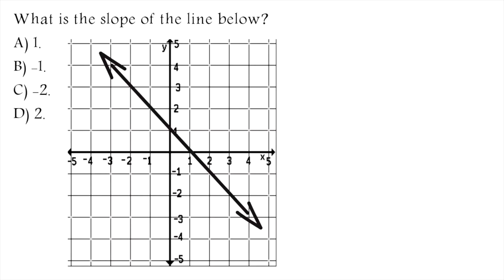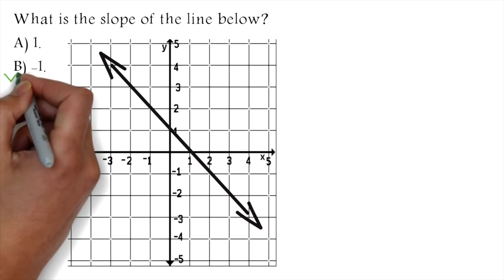What is the slope of the line below? A) 1, B) -1, C) -2, D) 2. The correct answer is B, -1.